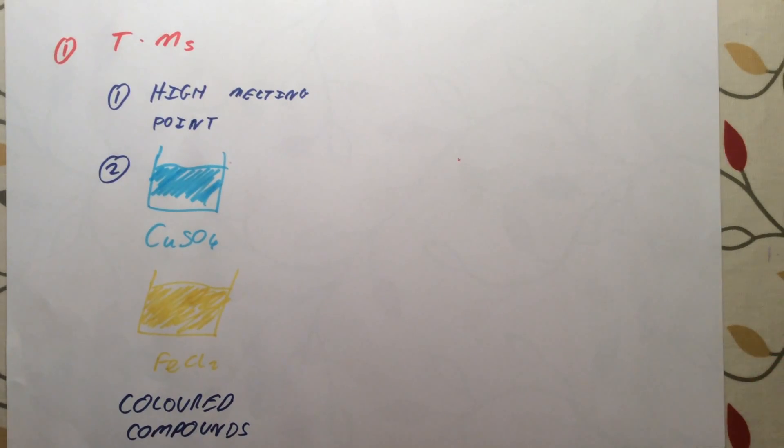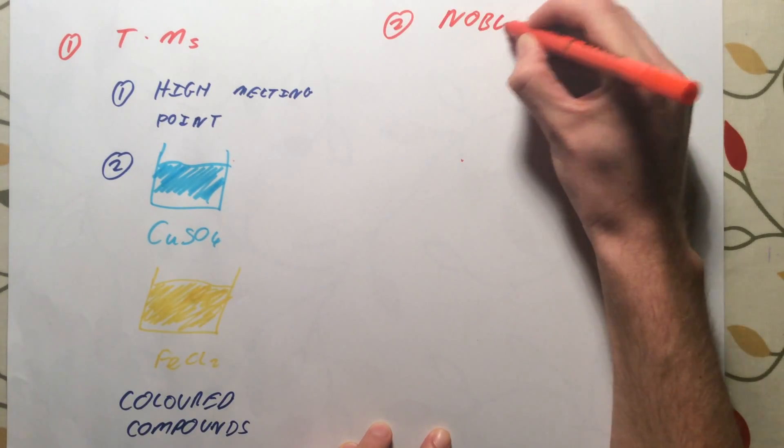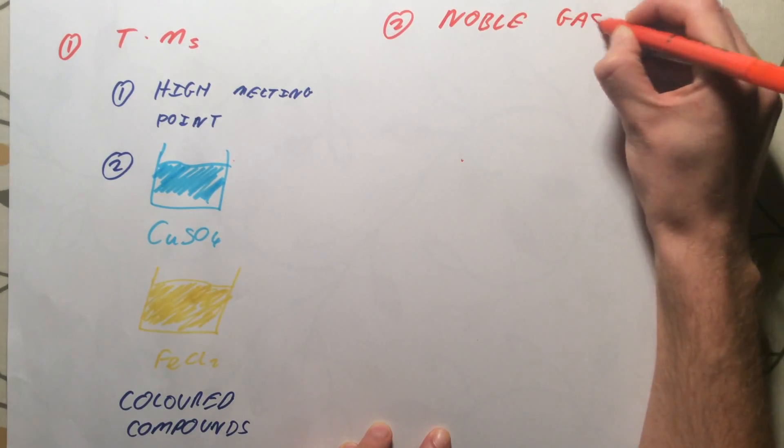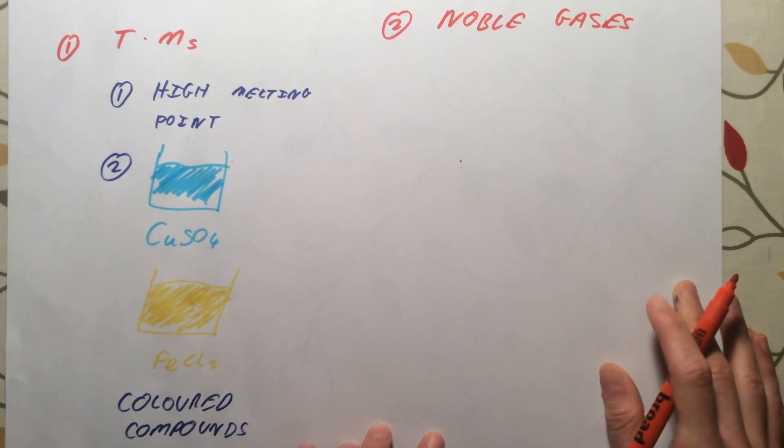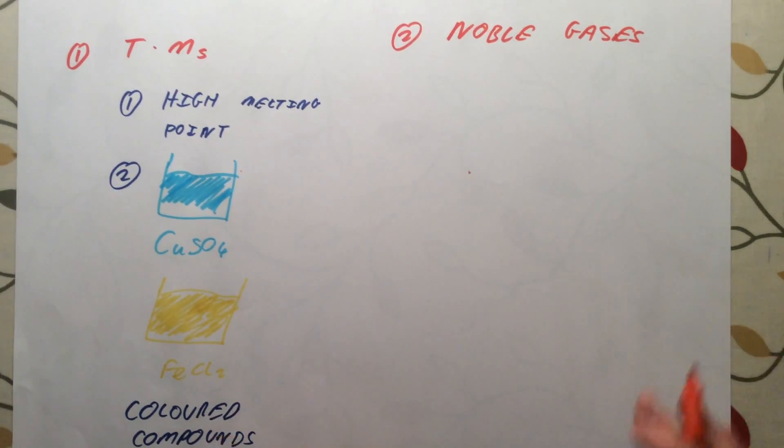The second area or group of the periodic table we need to know about are our noble gases, and we do need to know a little bit more information about these. The first thing we need to know is why they are called noble gases. And noble implies they are quite stable, they don't really react. So we need to be able to explain why that is the case.